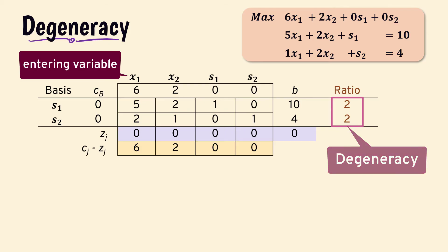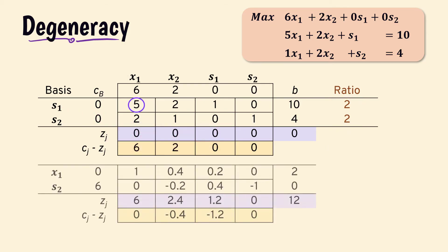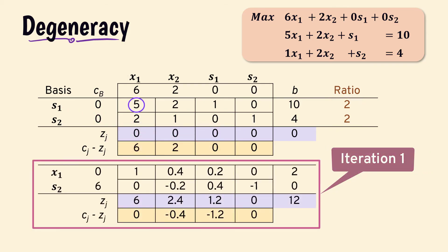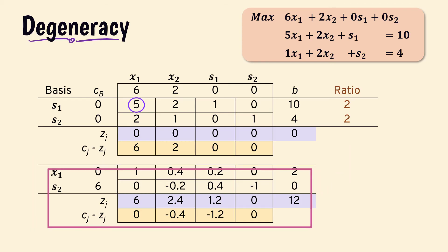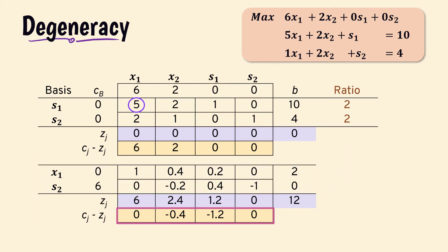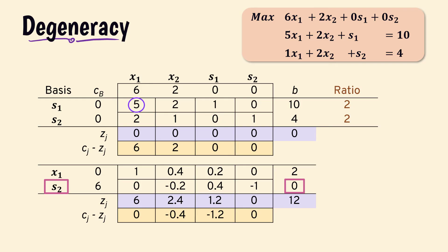Suppose we choose s1 as the leaving variable. Then at the first iteration, the net evaluation row has no positive value, indicating that we have an optimal solution: x1 equals 2 and s2, a basic variable, equals zero. Thus, we have a degenerate solution. We can tell in the tableau by either obtaining tied ratios or by having a basic variable equal to zero at the optimal solution.